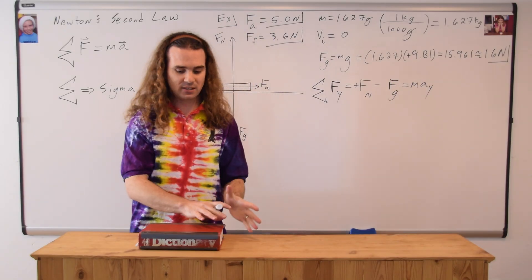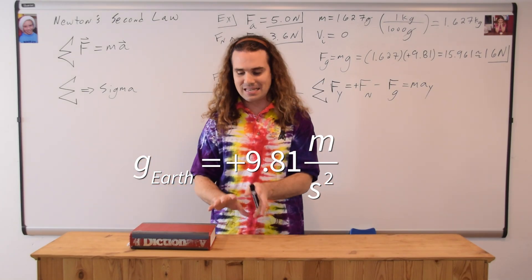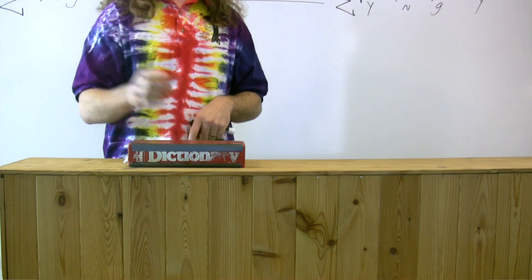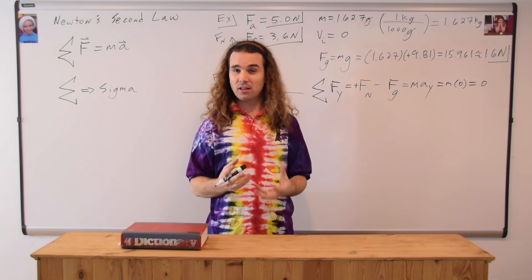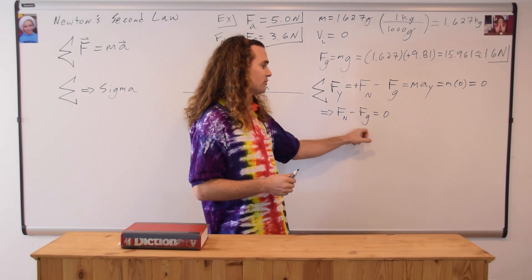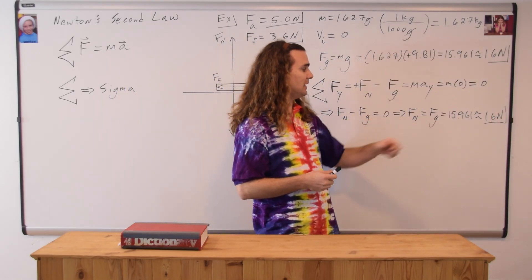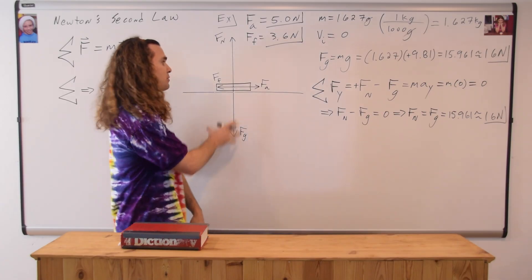What is the acceleration in the y direction while the force is being applied? The book doesn't move up or down, so the acceleration in the y direction equals zero. Anything times zero is zero, so the force normal minus the force of gravity equals zero. Therefore, the magnitude of the force normal equals the magnitude of the force of gravity, which is approximately 16 Newtons. Newton's second law helped us find the force magnitudes, and the free body diagram shows the directions. That completes part A.